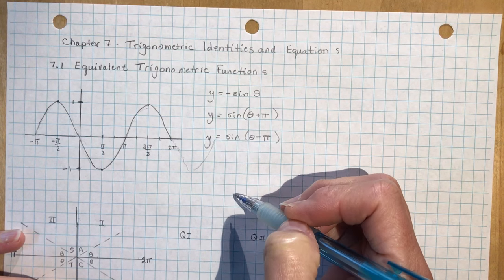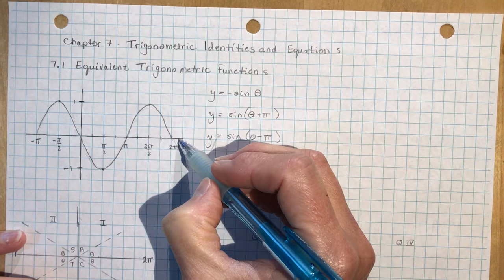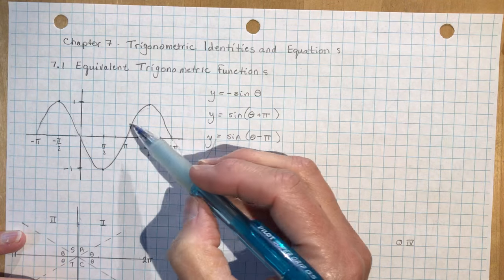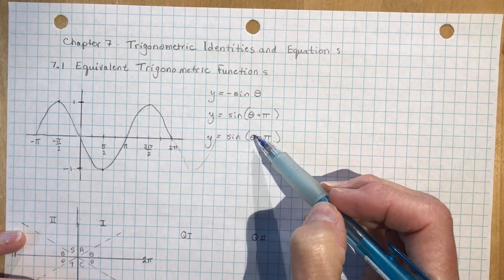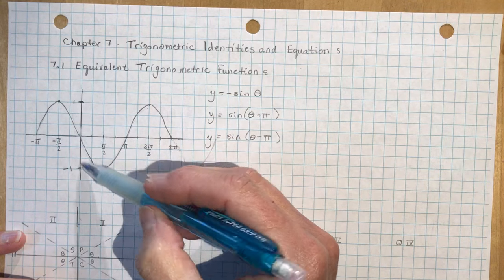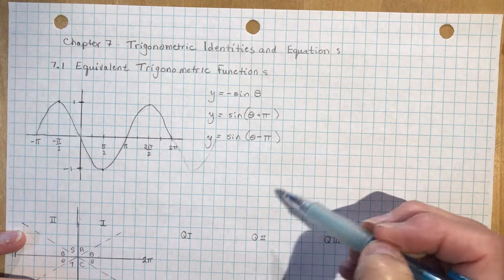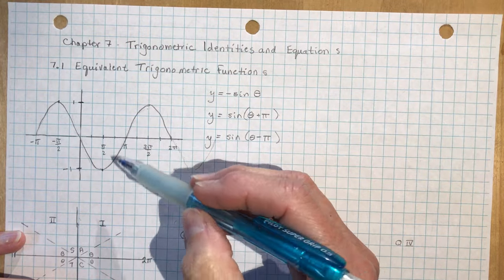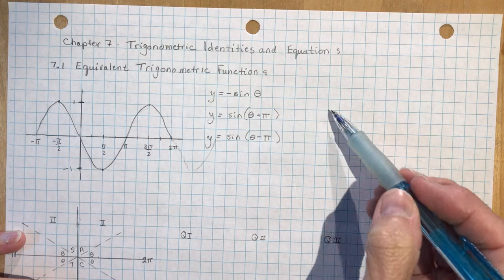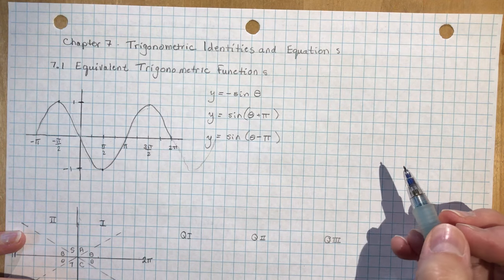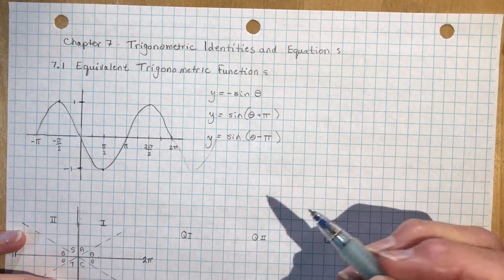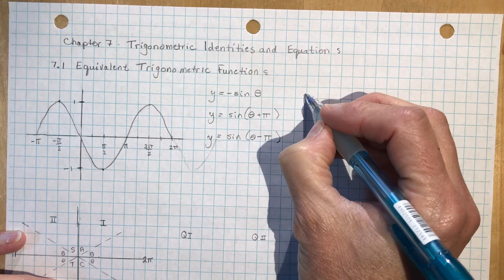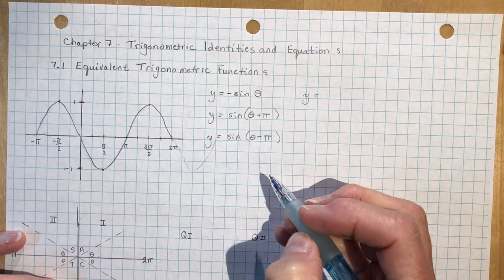I could give you all kinds of sine functions — if I just kept going, I could add 2π to any of these and keep going, because a sine function, unless restricted in domain, is a continuous function. It just keeps going and going, just like the Energizer bunny. So let's look at some cosine equations — we can give it some cosine function equations as well.